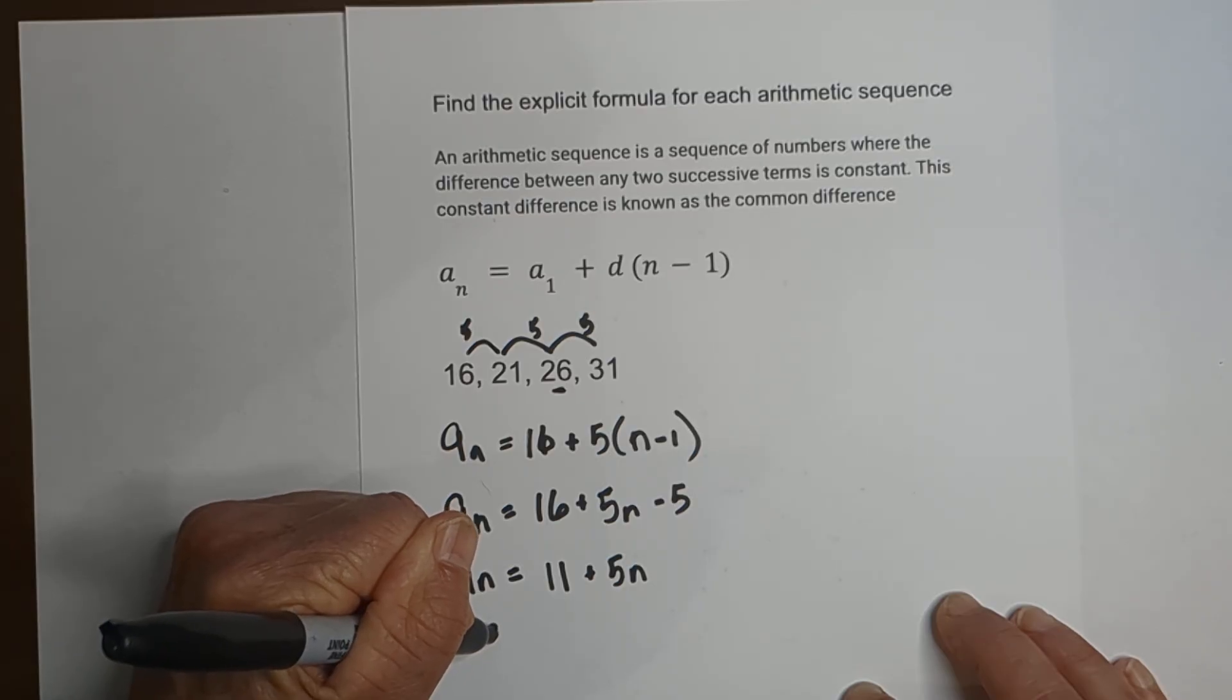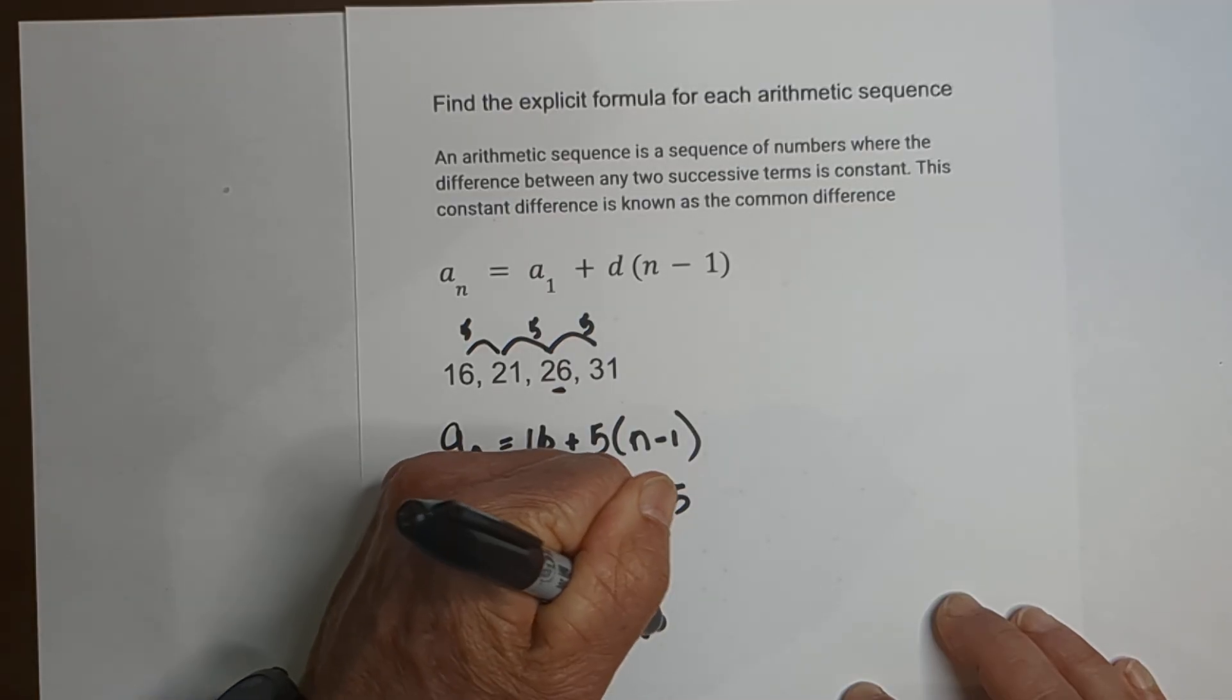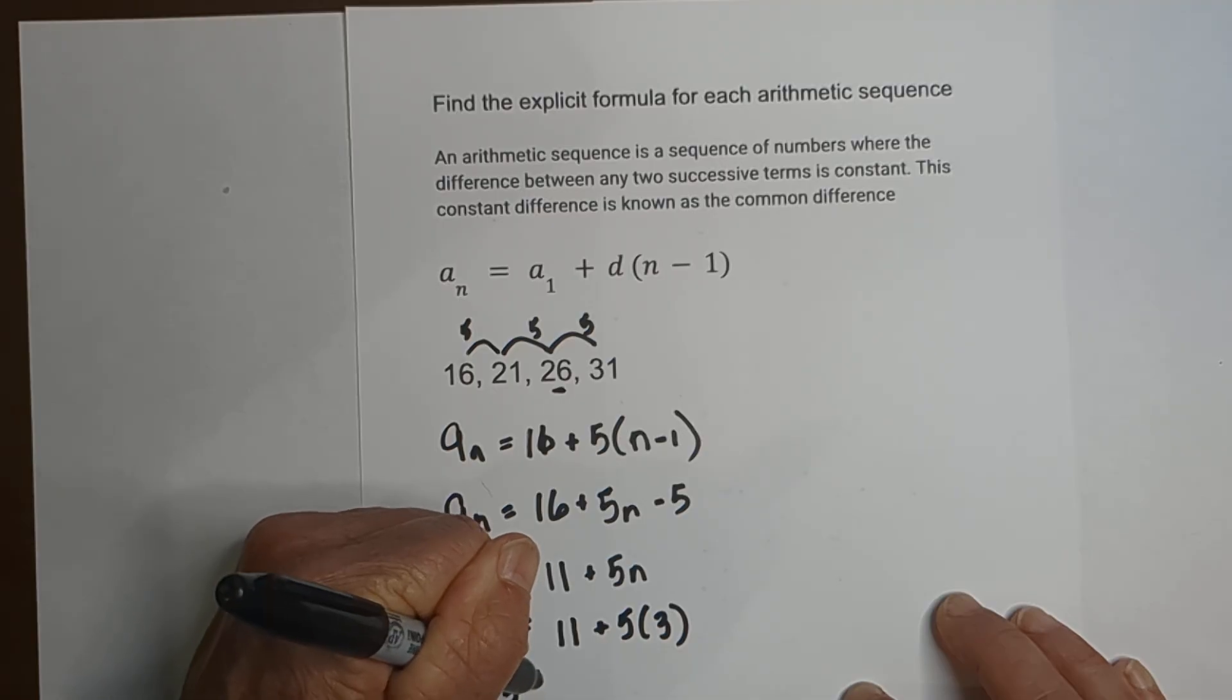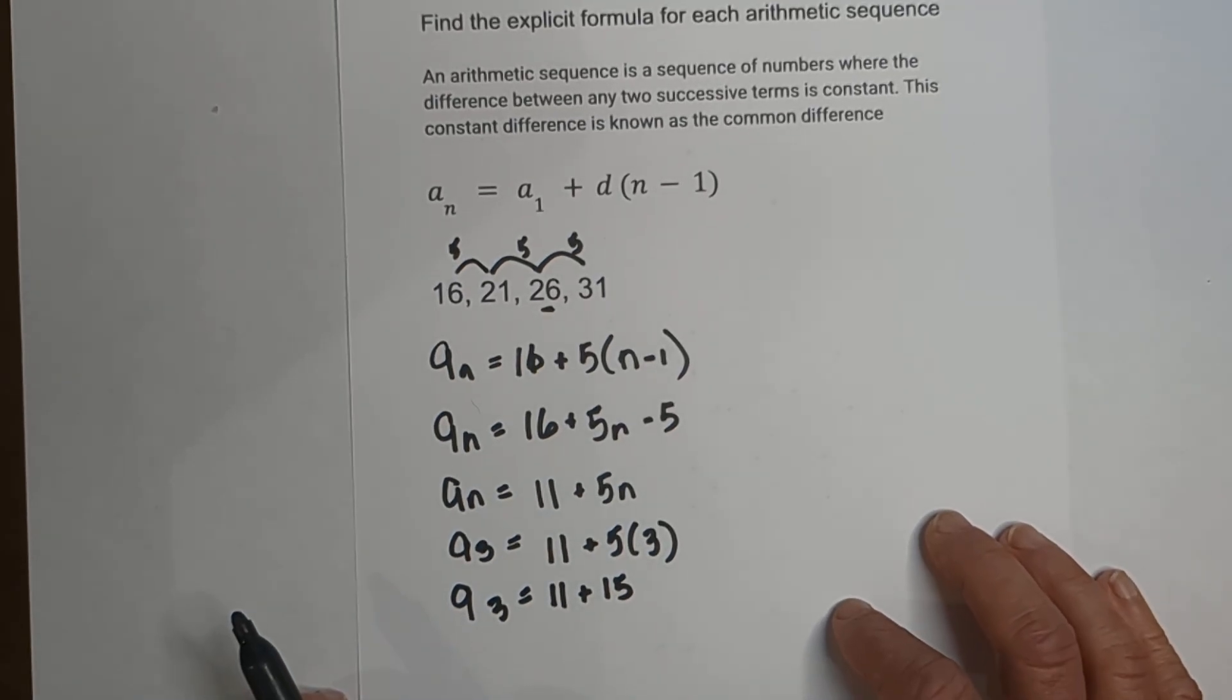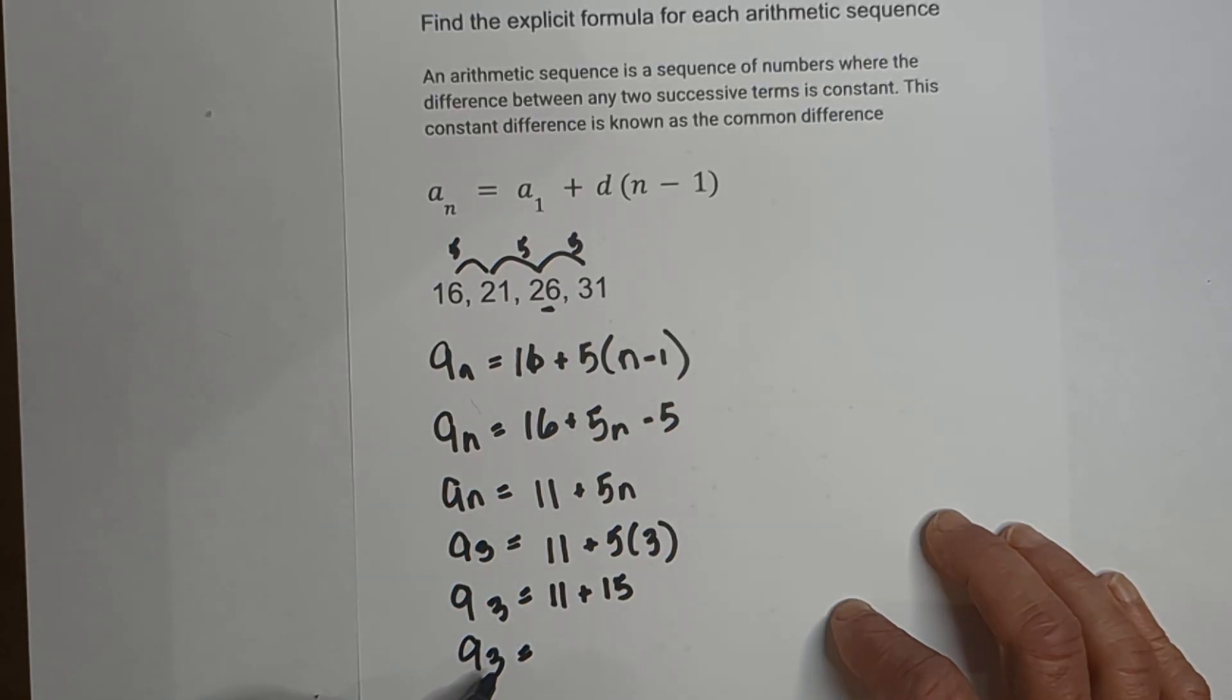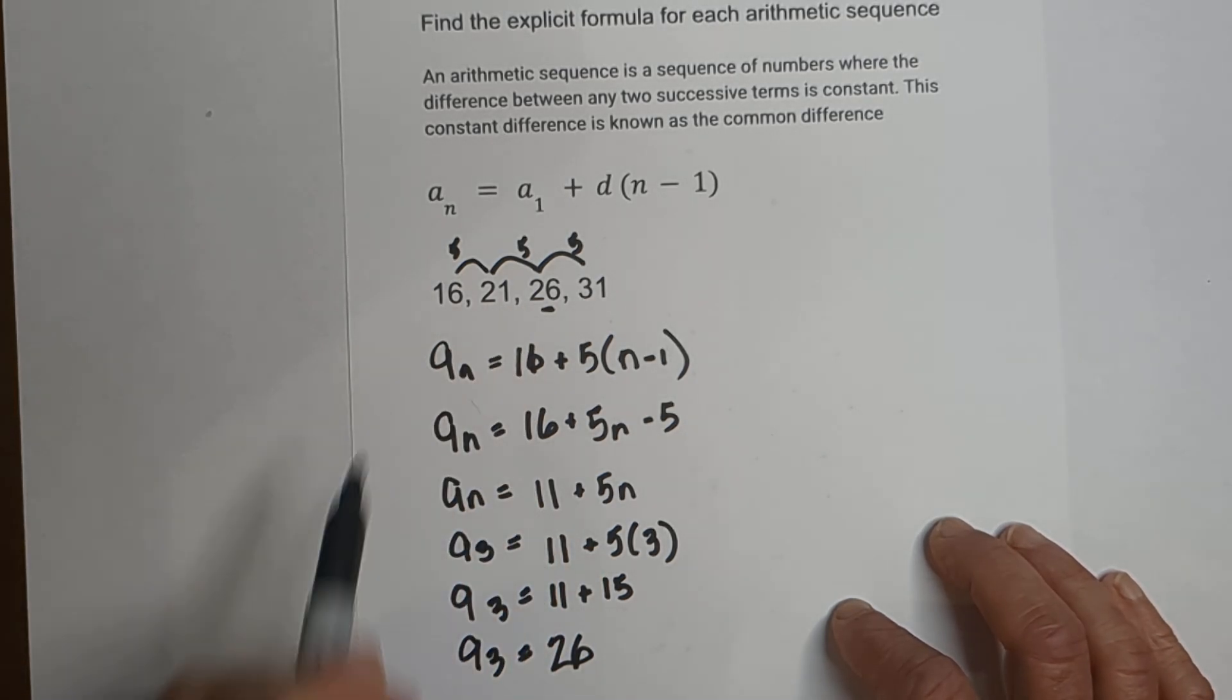We're going to go a_3 equals 11 plus 5 times 3, and that becomes a_3 equals 11 plus 15 because 5 times 3 is 15. And then a_3, in other words the third term, is equal to 11 plus 15 which is 26, and that is correct.